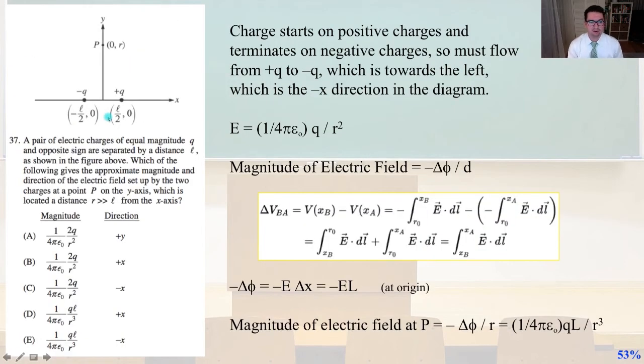Number 37. A pair of electric charges of equal magnitude Q and opposite sign are separated by a distance L, as shown in the figure above. Which of the following gives the approximate magnitude and direction of the electric field set up by the two charges at point P on the Y-axis, which is located a distance R much greater than L from the X-axis. So charge starts on positive charges and terminates on negative charges, so we must remember that.